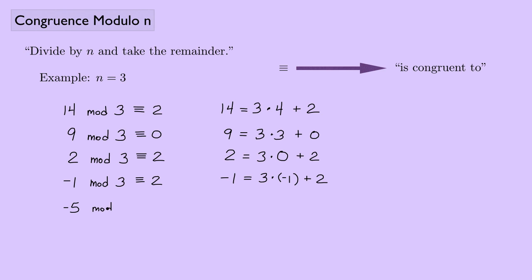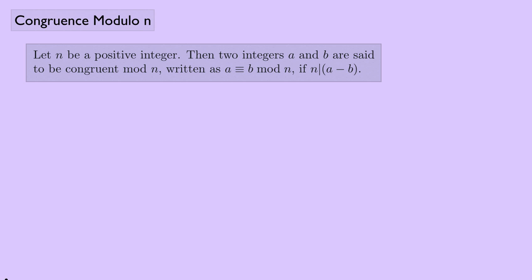Negative 1 equals 3 times negative 1 plus a remainder of 2, so negative 1 mod 3 is congruent to 2. How about negative 5? Negative 5 equals 3 times negative 2, which is negative 6, plus a remainder of 1, so negative 5 mod 3 is congruent to 1. Now let's give the formal definition: let n be a positive integer. Then two integers a and b are congruent mod n — written a ≡ b (mod n) — if n divides a minus b.